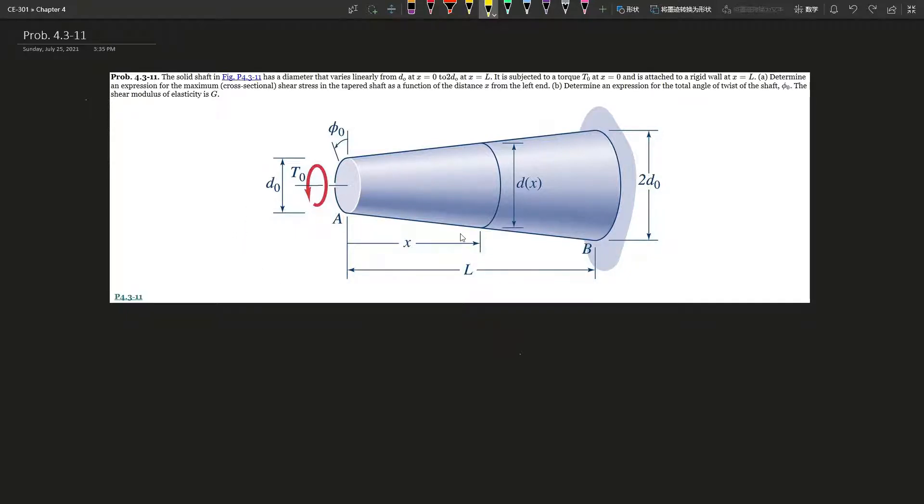Okay, so first we know that there's going to be torsion. The torsion is going to affect the angle and everything as x increases, right? So we know that when x is 0, it's d0. And when x equals L, then it gives you 2d0. So it basically wants you to find how d of x changes based on this.